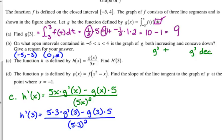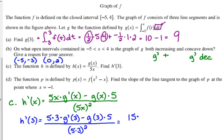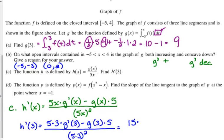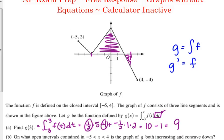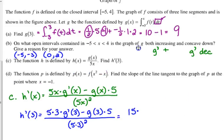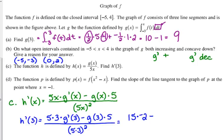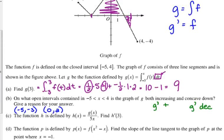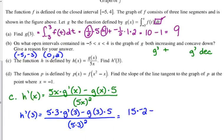So 5 times 3 is 15. G prime of 3. Well, we just established that G prime is equal to F. So, what is F of 3? G prime of 3, negative 2, minus G of 3. We're not looking at G. But, guess what? We computed that in part A. It was 9. G of 3 was 9.